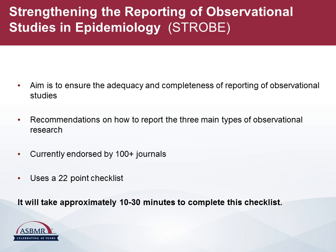STROBE is another set of guidelines we use. It stands for Strengthening the Reporting of Observational Studies in Epidemiology, and its aim is to ensure that observational studies are adequately and completely reported. STROBE contains recommendations on how to report the three main types of observational research, is currently endorsed by over 100 journals, and uses a 22-point checklist. The approximate time to complete the checklist would be between 10 and 30 minutes.